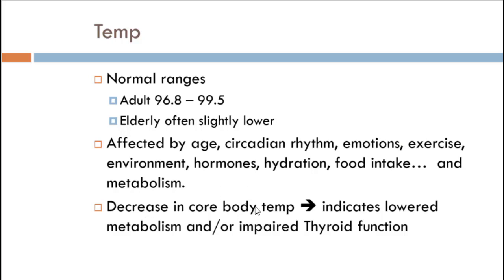Decreases in core body temperature indicate lower metabolic rate or impaired thyroid function. In fact, before thyroid testing was popular, a daily assessment of body temperature was the best way to assess thyroid dysfunction. If anything is over 100 degrees, you have a fever. It's good to look at your metabolic aspect — how hot your furnace is and how well your fuel is burning.